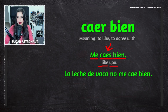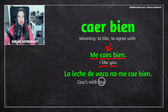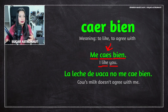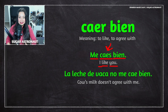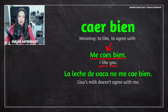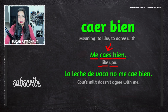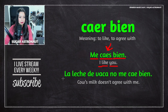The next example is 'la leche de vaca no me cae bien.' This means 'cow's milk doesn't agree with me.' This phrase is used when talking about food as well. If you drink or eat something that makes your stomach growl, or if you feel unwell — for example, you get an upset stomach — you can use this phrase.